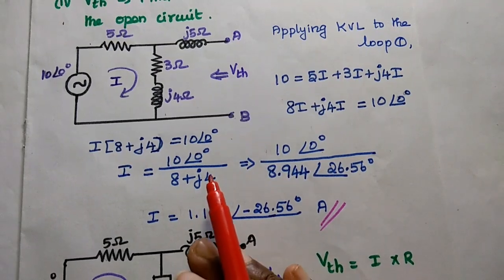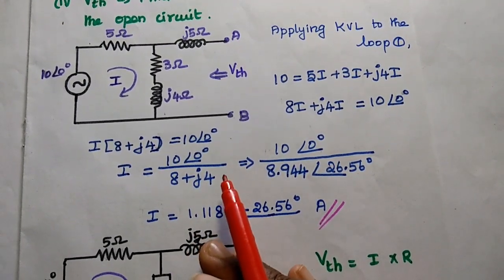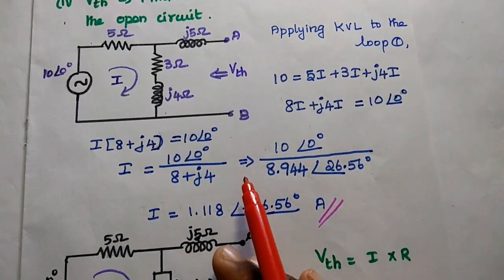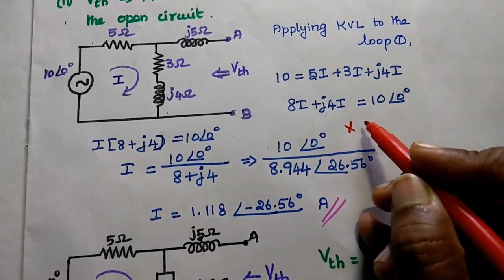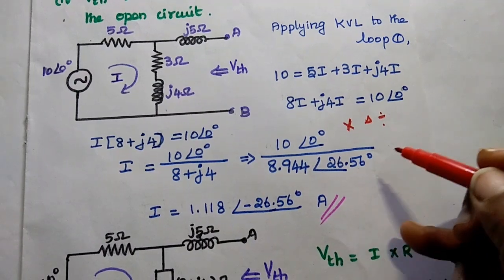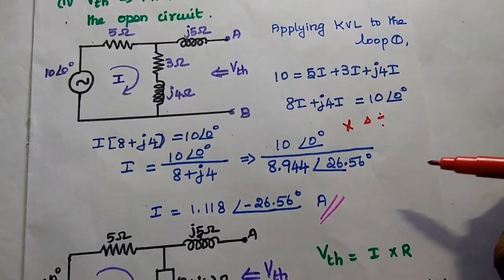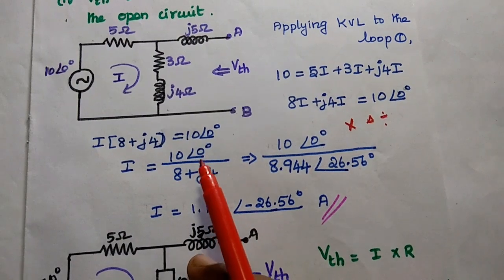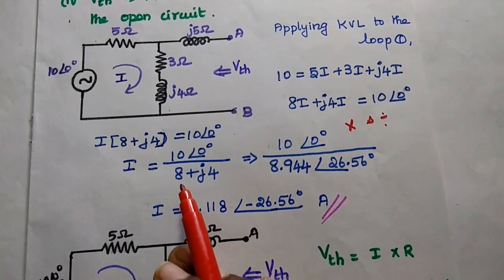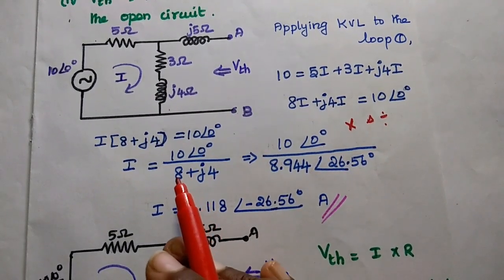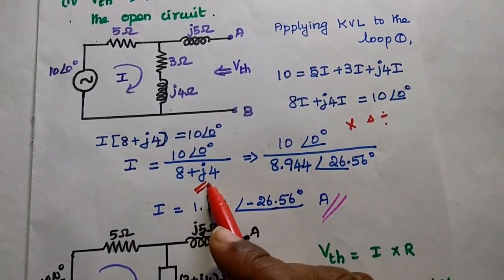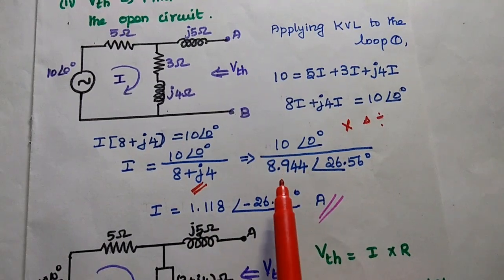Whenever we deal with complex numbers and perform division, we convert the rectangular form into polar form. In case of multiplication and division we use only polar form. In case of addition and subtraction we use rectangular form. The numerator is in polar form; in the denominator we have rectangular form 8 plus J4, which we need to transform into polar form.